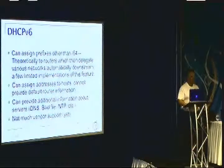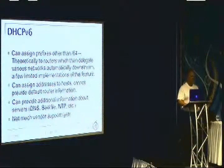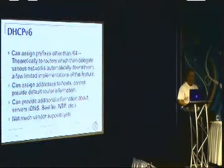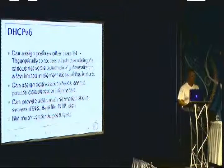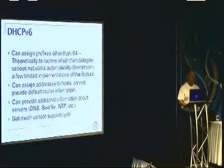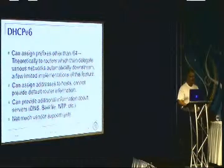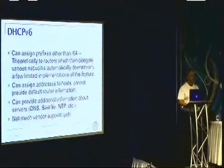The prefixes plus the EUI-64 address are used to create global unicast addresses. If you want to use DHCP, you can assign prefixes other than a /64 — stateless autoconf only works with a /64. Usually if you're assigning shorter prefixes with DHCP, you should use DHCP prefix delegation to assign a /48 to customer premise equipment. DHCP can assign addresses to hosts but cannot provide default or other routing information. It can provide additional information about DNS, boot files, NTP, and boot servers. Some vendors have limited DHCP support, so make sure you get what you need from your vendor.